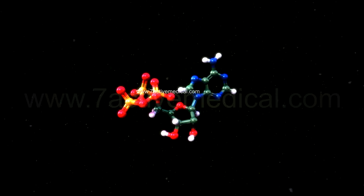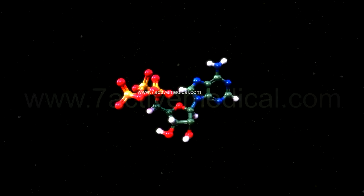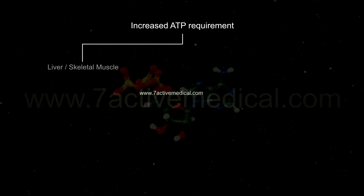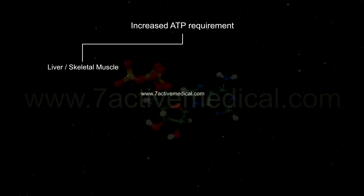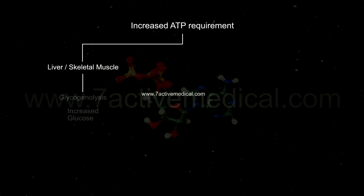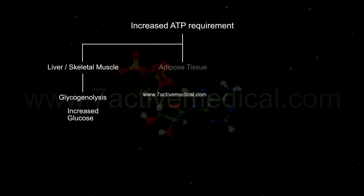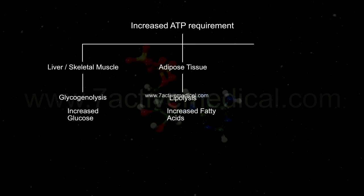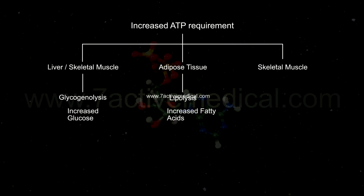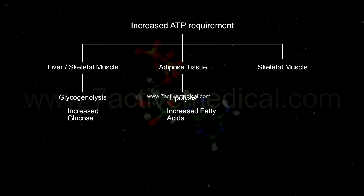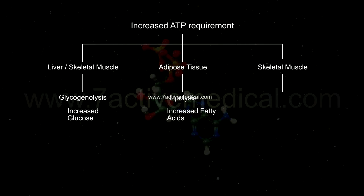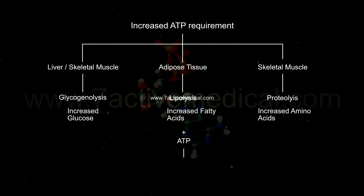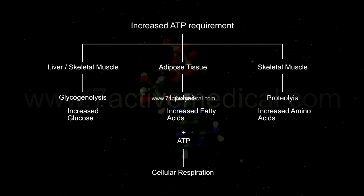All this creates a need for more ATP, which is mobilized through the energy stores of the liver and skeletal muscles through glycogenolysis, the adipose tissue through lipolysis, and the breakdown of skeletal muscles to amino acids through proteinolysis, thereby providing substrates for cellular respiration.